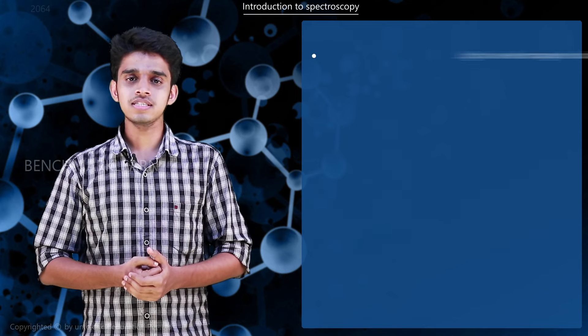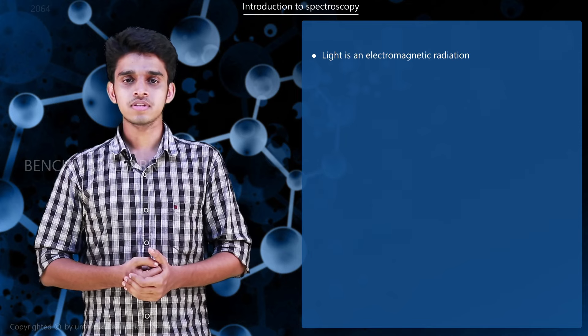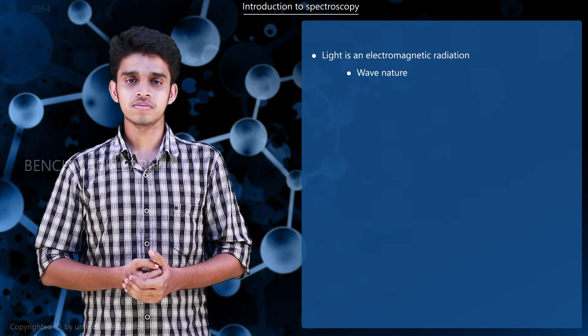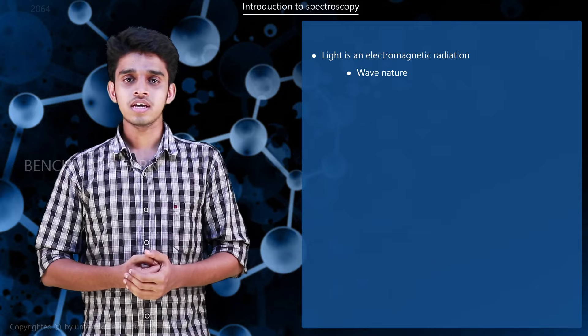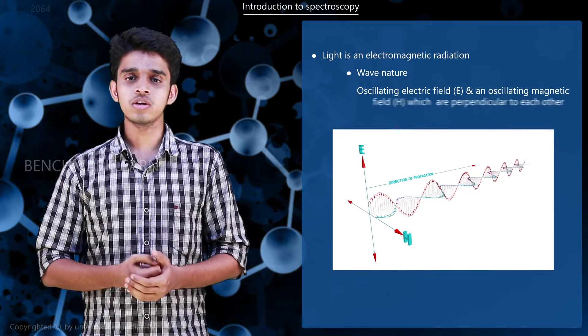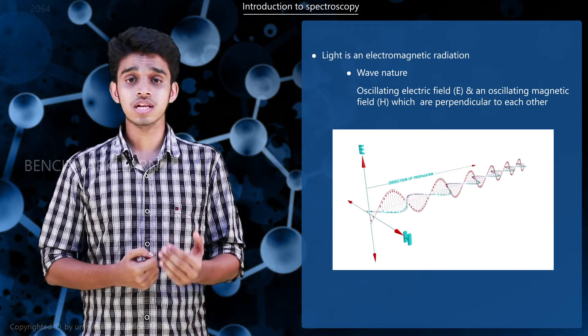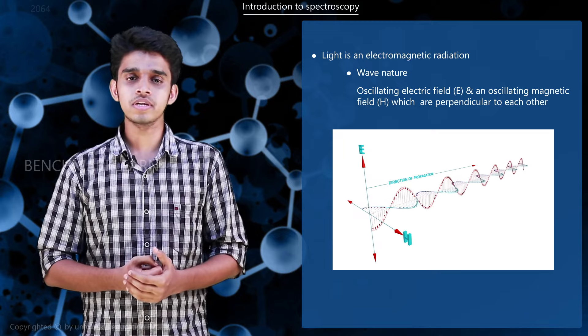We know that light is electromagnetic radiation and it has a wave nature. In wave nature, an EM radiation consists of an oscillating electric field and an oscillating magnetic field which are perpendicular to each other.